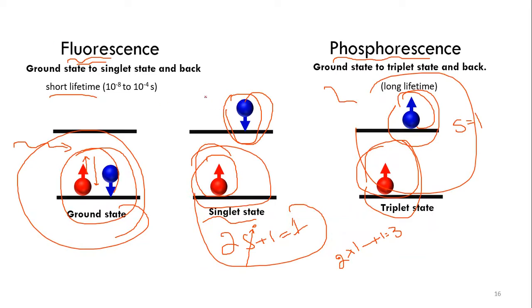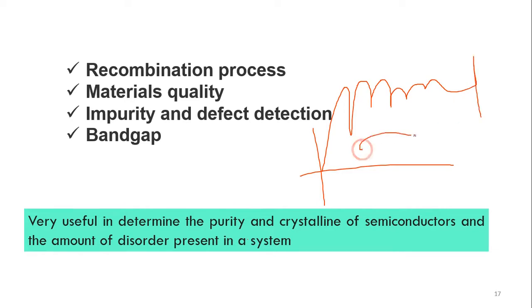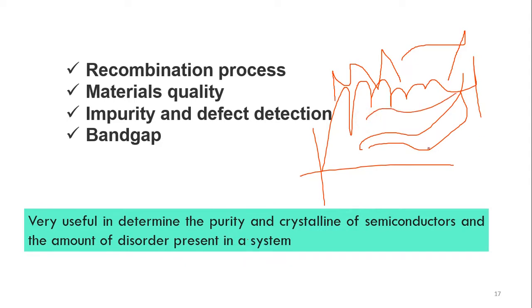Now let us see the applications of photoluminescence. It is very useful in determining the purity and crystallinity of semiconductors and the amount of disorder present in a system. From PL, we can understand whether the material is pure or crystalline in nature — if the peaks are uniform, we can say there is order, and if there is disorder, the peaks will be irregular. So PL gives us information about the crystallinity and purity of a semiconductor.